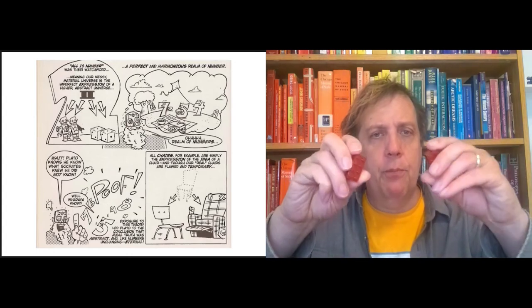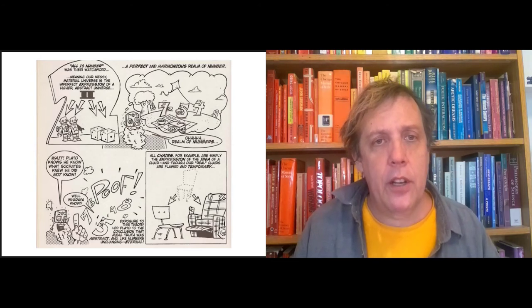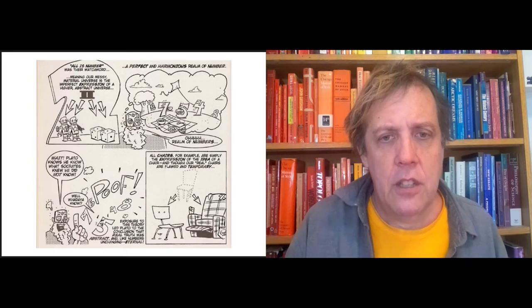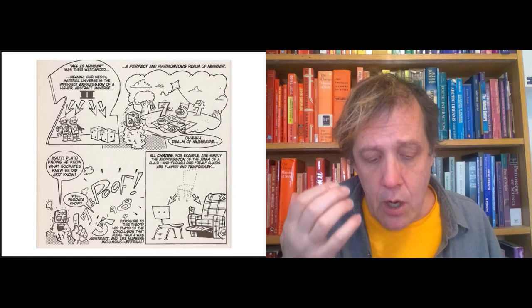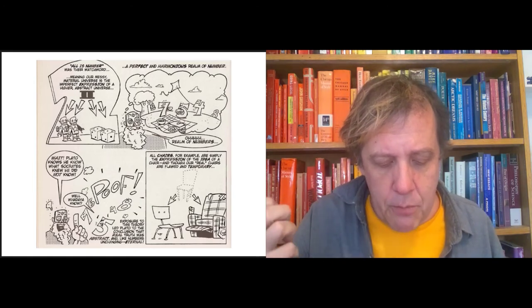So all is number is the watchword of the Pythagoreans. Now let's think about how everything can be number. Well, interesting thing about a number like two. It represents a vast number of all sorts of different collections of things. Right here are two Legos. The number two captures this. But the number two actually also captures the number of dice, the number of feet you probably have, the number of robots in that picture. The number two is an abstract entity that manages to gather together a bunch of particulars.